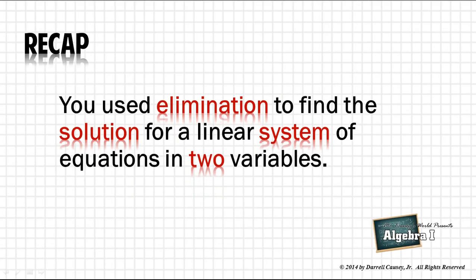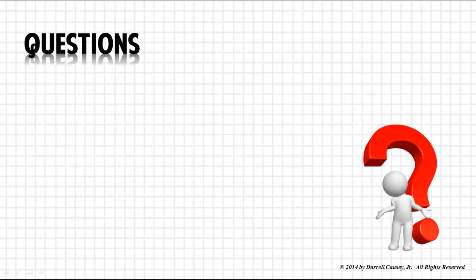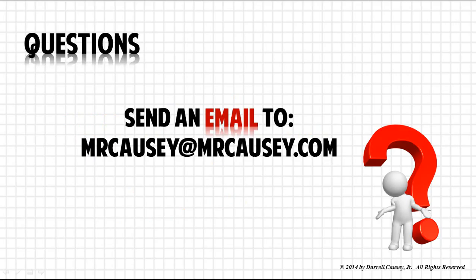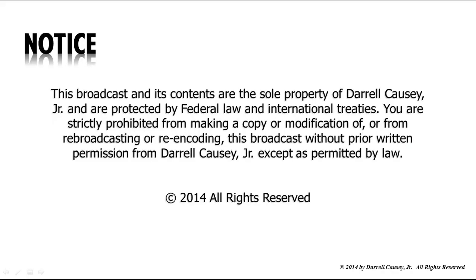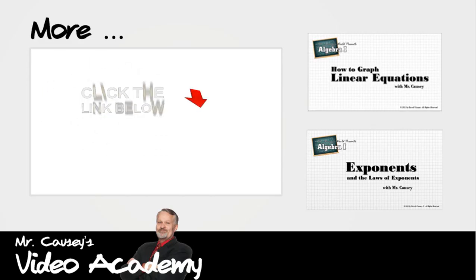In our recap, you used elimination to find the solution for a linear system of equations in two variables. We did three different types to show you the different things that can happen when combining systems. One thing you need to remember is that it's very important to have your algebra skills intact. You've got to know the basics of algebra to make it work. If you have any questions concerning this lesson, send an email to mrkazi at mrkazi.com. We'll see you guys next time.